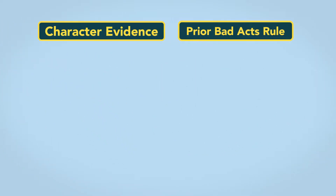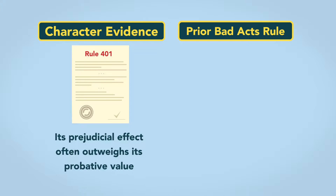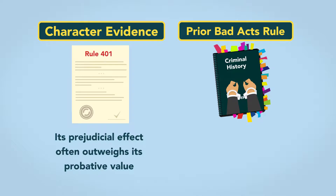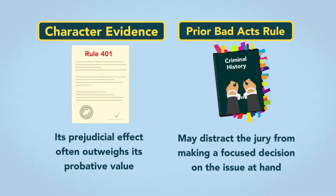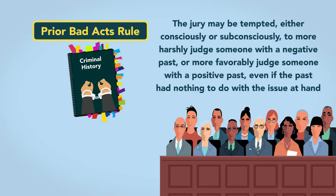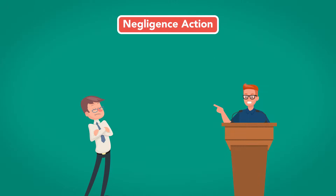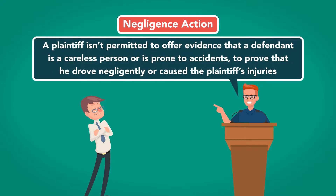There are several explanations underlying these rules. First, even though character evidence may be relevant under Rule 401, its prejudicial effects often outweigh its probative value. Second, evidence of how a person has acted in the past is not directly related to the current legal issue before the jury and may distract the jury from making a focused decision. The jury may be tempted, either consciously or subconsciously, to more harshly judge someone with a negative past or more favorably judge someone with a positive past, even if the past has nothing to do with the issue at hand. In a negligence action, for example, a plaintiff is not permitted to offer evidence that a defendant is a careless person or is prone to accidents to prove that he drove negligently or caused the plaintiff's injuries.